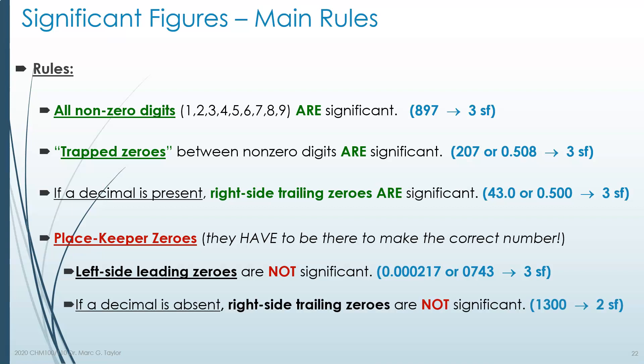If a decimal is absent, the right-side trailing zeros — when a number is written without a decimal point — these trailing zeros are not significant. So 1,300: those two zeros are not adding to the quality of your measurement. You can think of this as 'about 1,300' — closer to 1,300 than to 1,200 or 1,400. Therefore, there are only two significant digits. Those two zeros are placekeepers filling in the ones place and the tens place, and they are not significant.